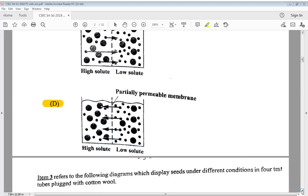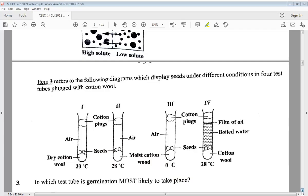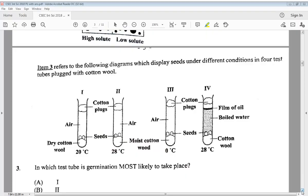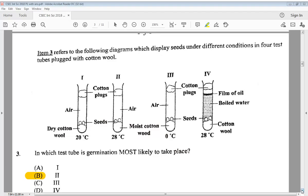Let's go to item 3. Item 3 refers to the following diagrams which displays seeds under different conditions in four test tubes plugged with cotton wool. So we have four diagrams there. In which test tube is germination most likely to take place? Well, we can see that it is likely to take place at 2. It has the right temperature. So B would be in the right condition for seed to germinate.